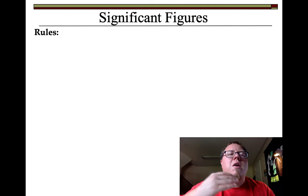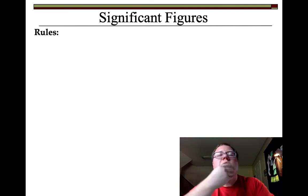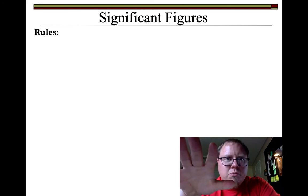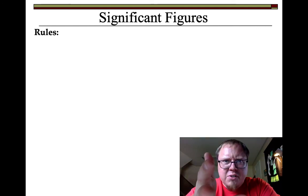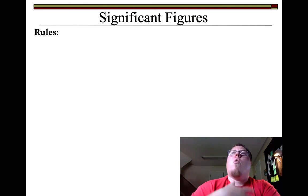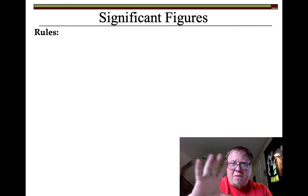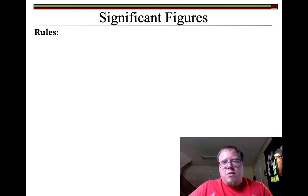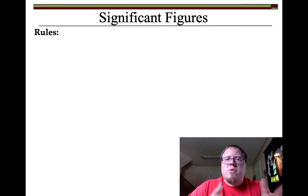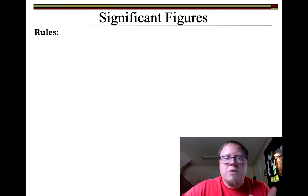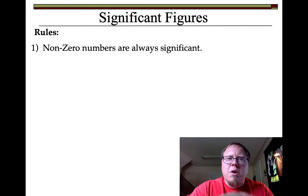There are some rules for when you look at a number and want to figure out how many significant figures it has, or when you're writing a measurement and need to determine significant figures based on your device. The first rule: non-zero numbers are always significant — that's 1, 2, 3, 4, 5, 6, 7, 8, 9.